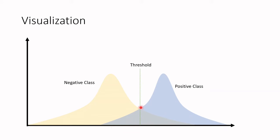You can see by this visualization that the threshold divides our data into four different groups. Looking only at the positive class, the threshold divides it into the truly predicted positive and the falsely predicted negative. And looking only at the negative class, the threshold divides it into the truly predicted negative and the falsely predicted positive.